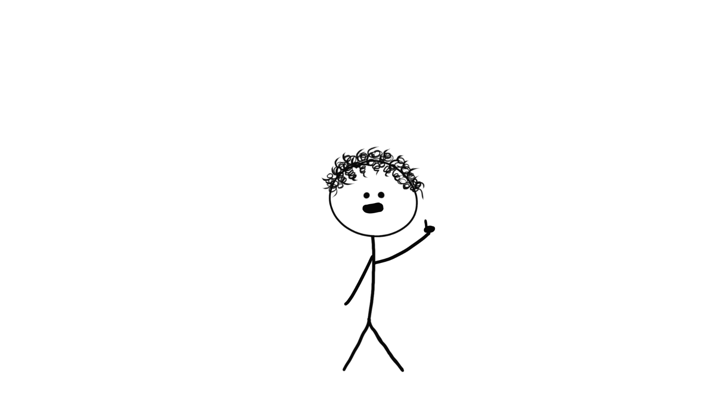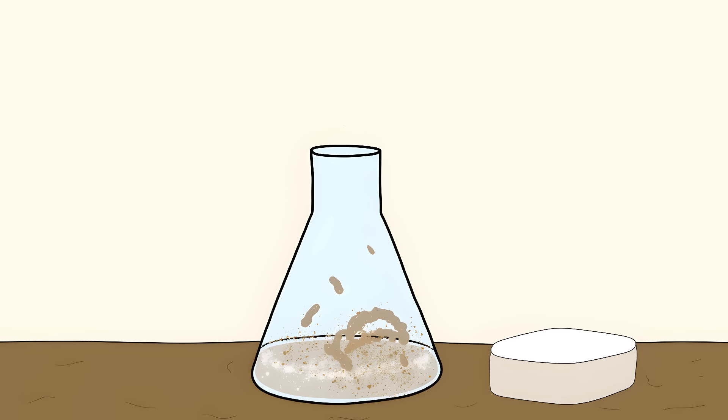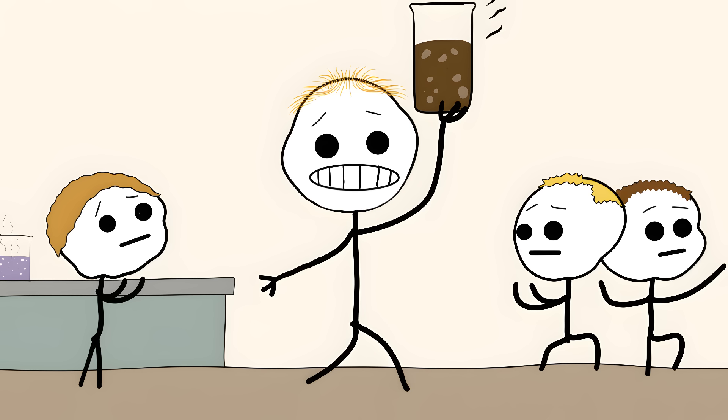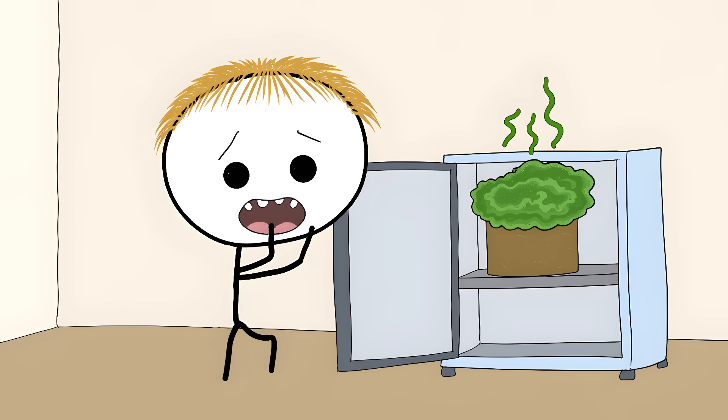But after all the excitement, after all the wild theories and doomsday predictions, you know what polywater turned out to be? Just regular water mixed with sweat and soap residue from dirty lab equipment. That's right. These brilliant scientists basically discovered dirty water. It's like finding a mysterious substance in your fridge, only to realize it's just last month's forgotten leftovers.